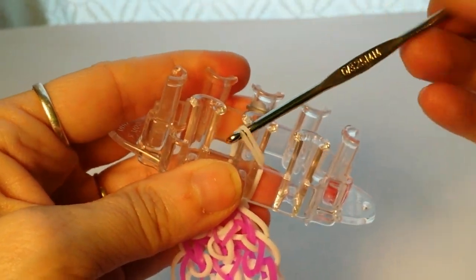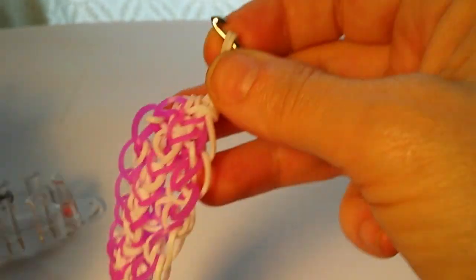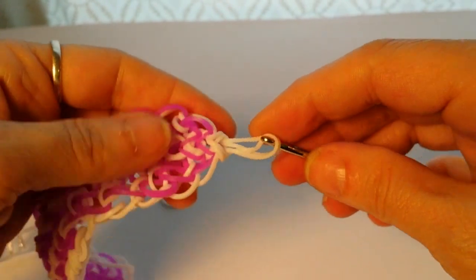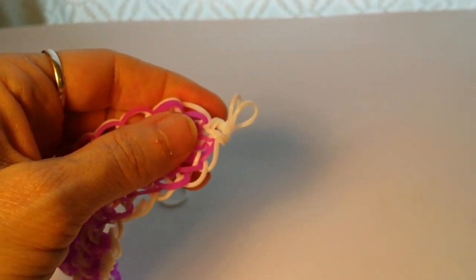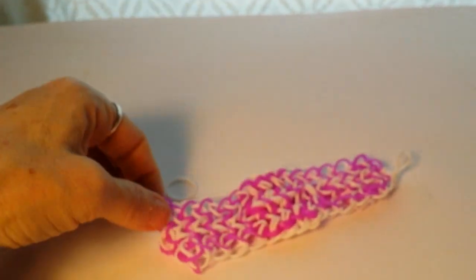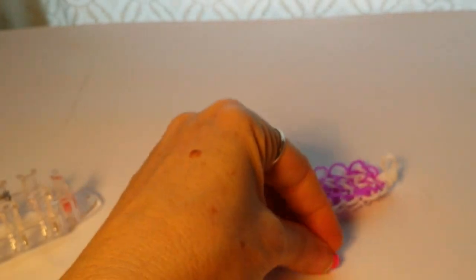Now I'm going to hook my hook through here and pull this off. And that gives me a nice finished end to put my clip through. So let me see if I have a clip up here. Hopefully I do. Otherwise I'm going to steal one from another bracelet, which probably is what I'm going to do here. Okay, no, here's a nice clip. So I have a clip.